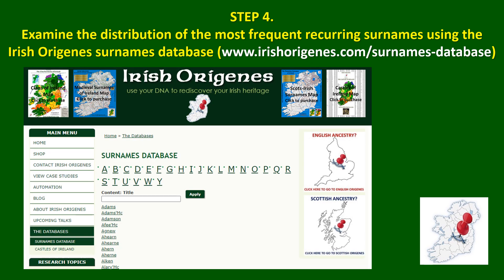You now have your list of surnames. The first thing you want to do is see where those surnames occur in census data. So you go to the Irish Origins surnames database and literally input your surname.